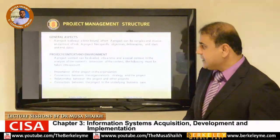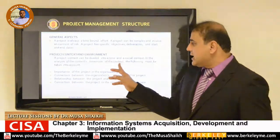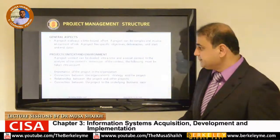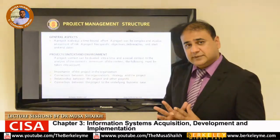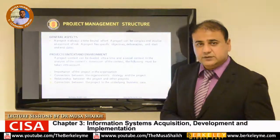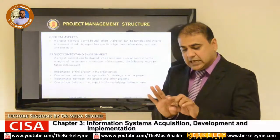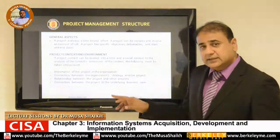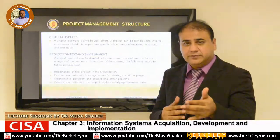When we talk about project context and environment, it can be divided into two ways: the time framework and the social context - that this project is commercially viable and acceptable. We see what is the importance of the project in the organisation, how management views this project - whether it is high priority, medium, or a normal day-to-day project. The connection between the organisation strategy and the project should be harmonised and aligned - there is a strategic alignment. We also look at the relationship between this project and other projects, and the dependency or independence from other projects.